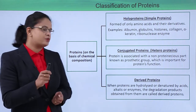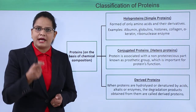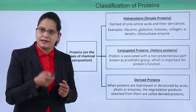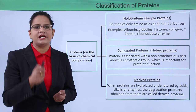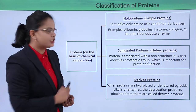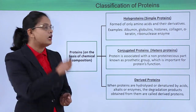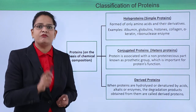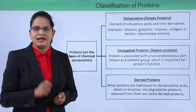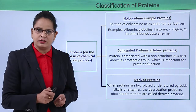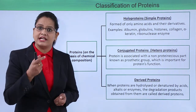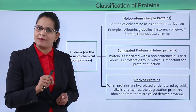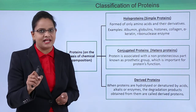On the basis of chemical composition — meaning what types of groups are attached to them and whether they function individually — proteins are of three types: holoproteins, conjugated proteins, and derived proteins. Holoproteins are very simple proteins made up only of amino acids. Examples include keratin, collagen, albumins, globulins, and the histone protein found in DNA.